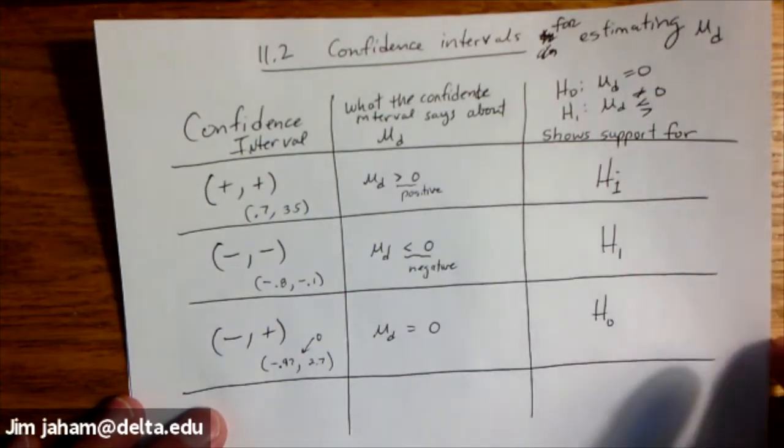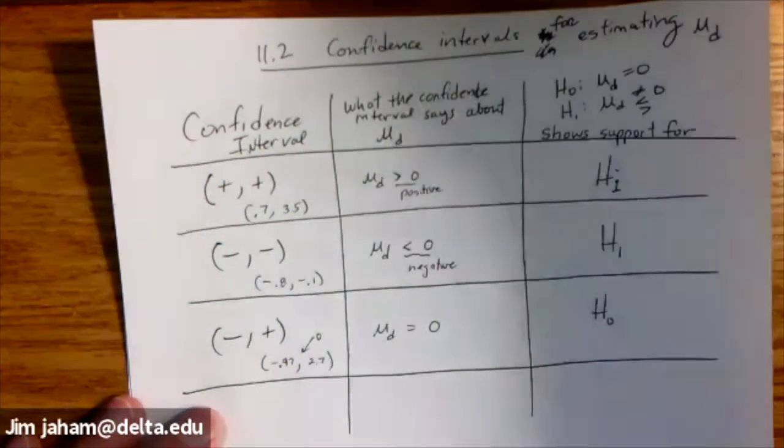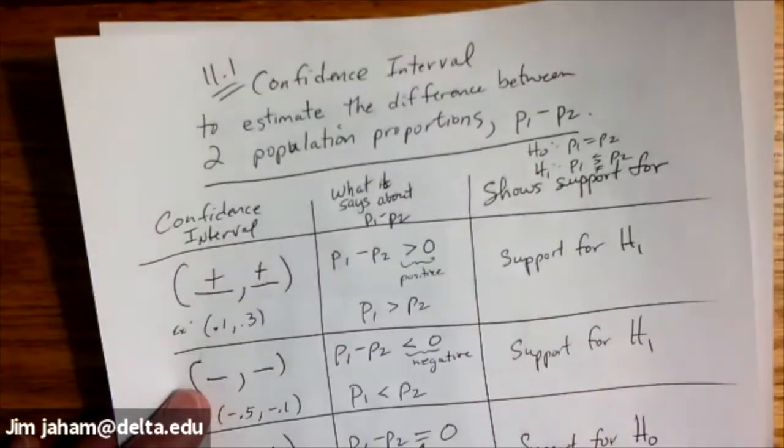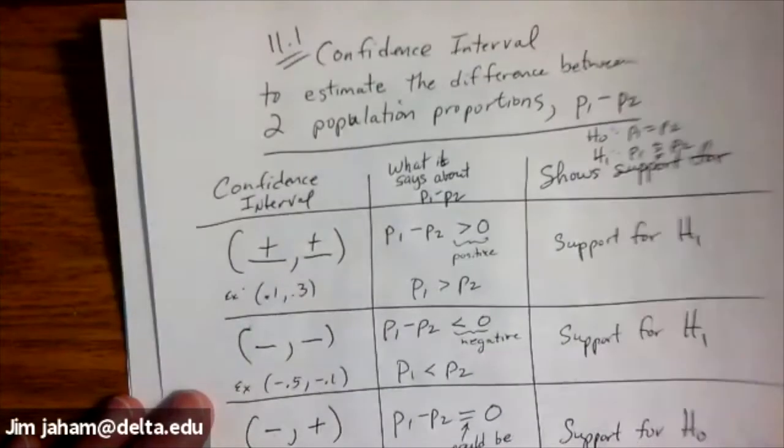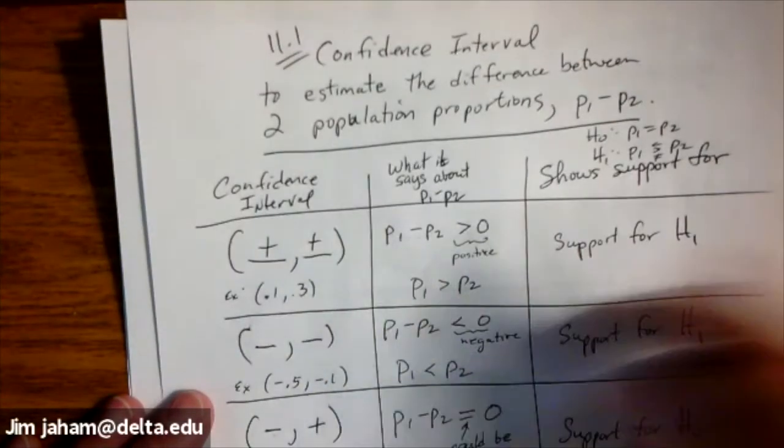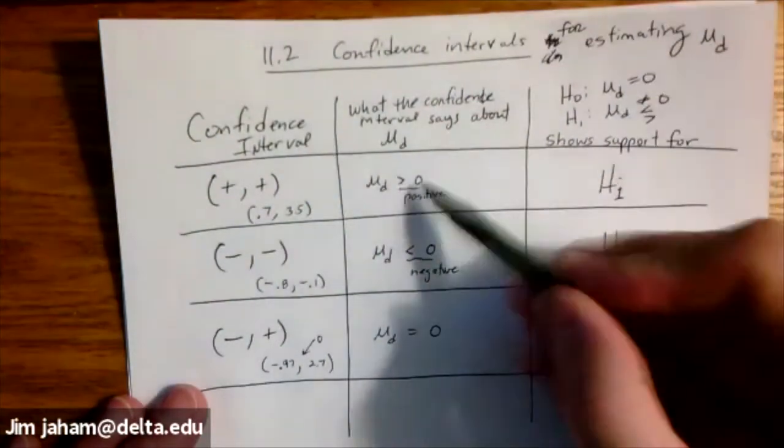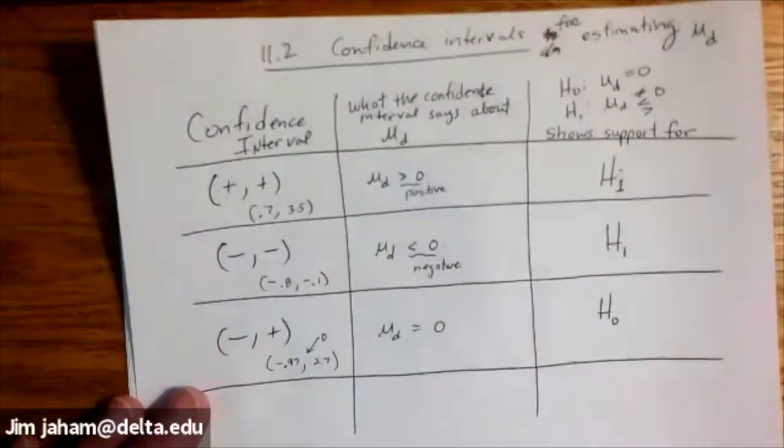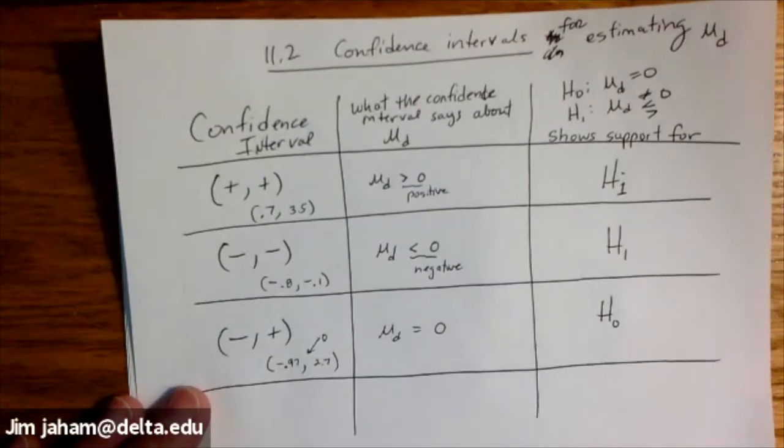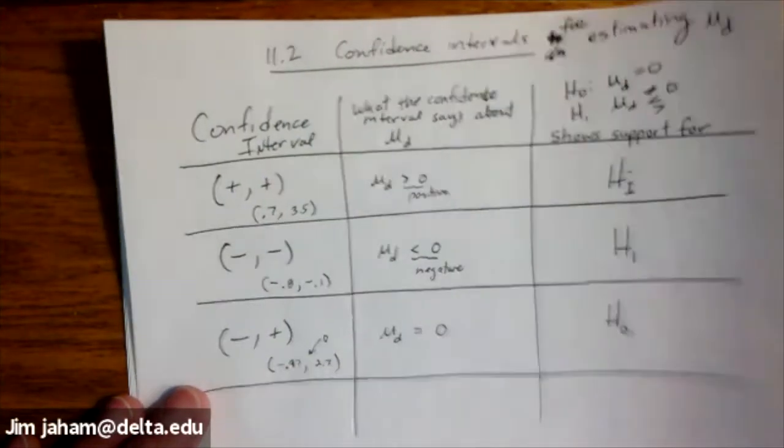So this is kind of a similar grid that I gave you for the difference of two proportions, and that's because we were looking at the difference and we compared it to zero. And we're comparing this one to zero. So similar, let's take a look at an example.